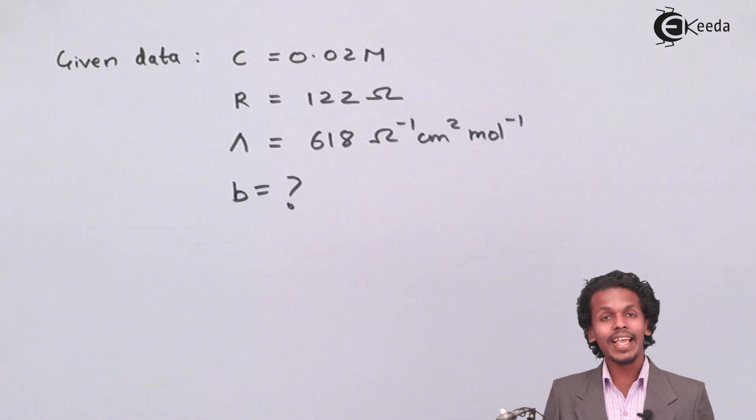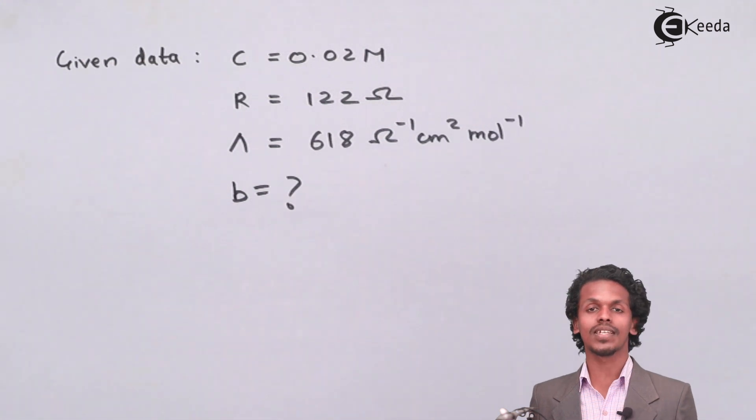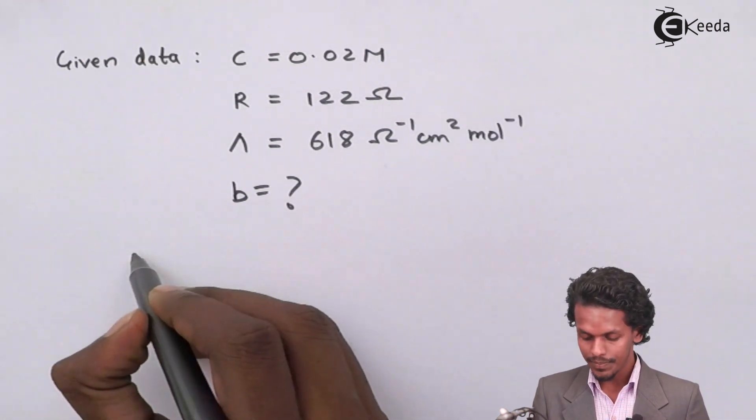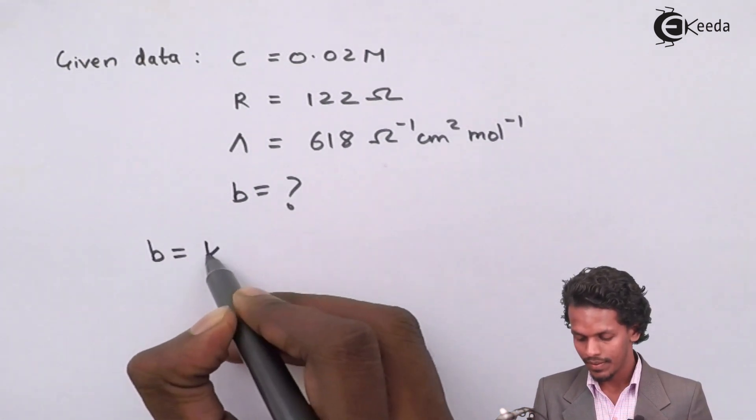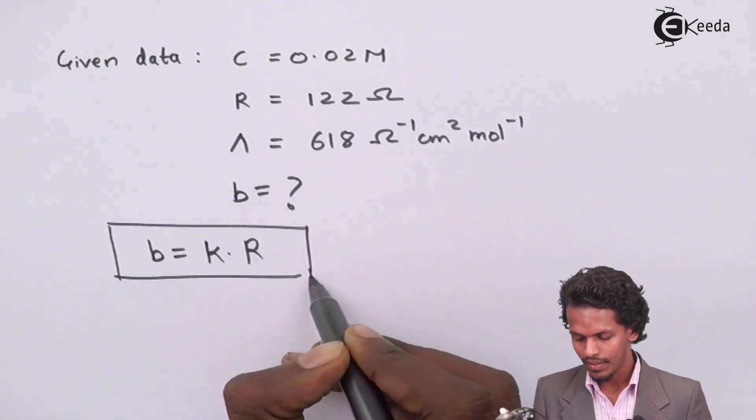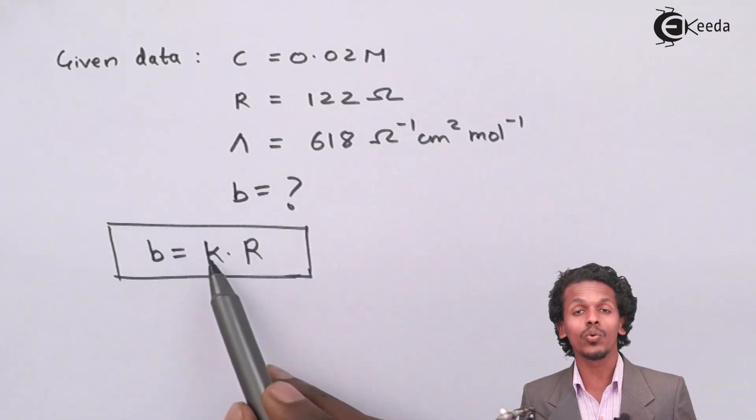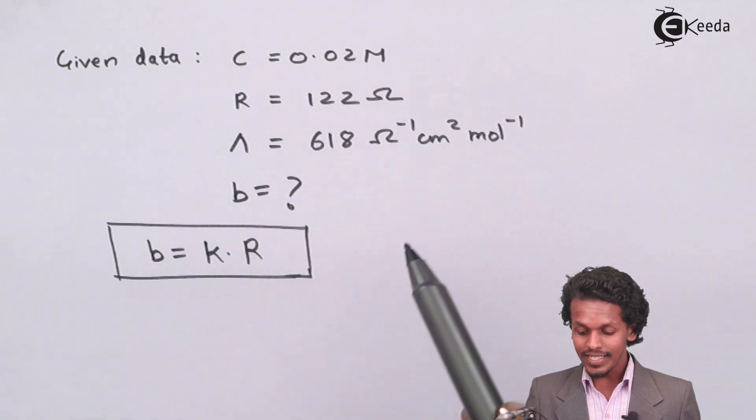Before estimating the value of b, we know that the cell constant is only related to conductivity. But in this case, the conductivity is not mentioned.